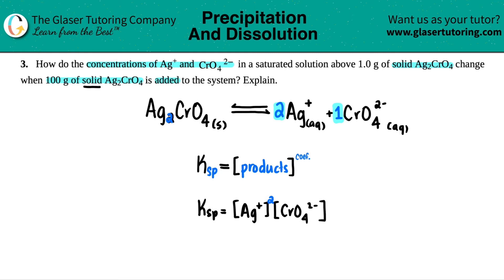So for the Ag, I have to raise that one to the second power because you always raise each product by the coefficient. So it would be basically Ag plus raised to the second, then times by the chromate. And since there's only one, I can put a one here, but nobody cares, right? Anything raised to the first is itself.